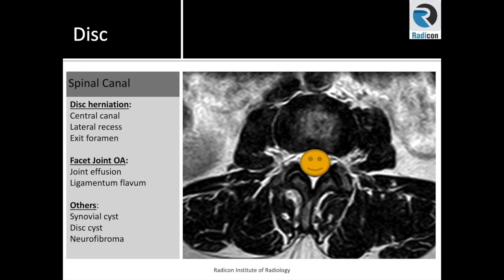Two of the most common acquired causes are disc bulge or disc herniation and facet joint osteoarthritis. The disc herniation can affect the central canal, lateral recesses, or exit foramina, while facet joints with effusion and ligamentum flavum hypertrophy can also impact the thecal sac or exit foramina.